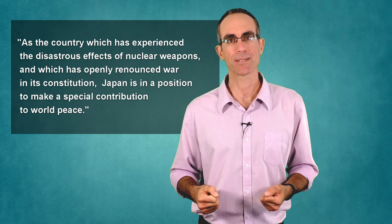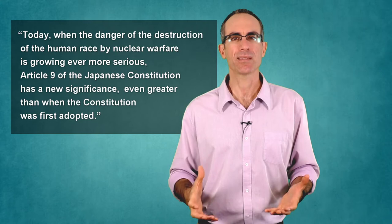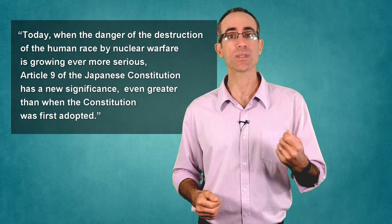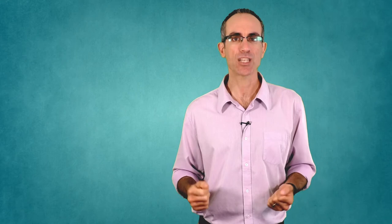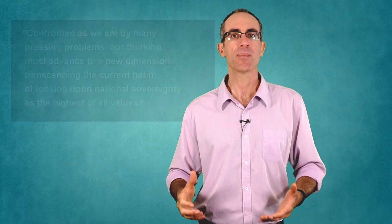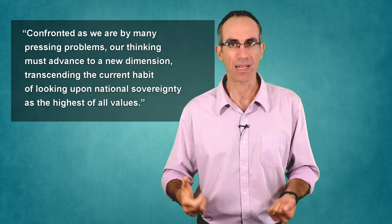They went on, today, when the danger of the destruction of human race by nuclear warfare is growing ever more serious, article 9 of the Japanese constitution has a new significance, even greater than when the constitution was first adopted. The statement also criticized traditional thinking and practices of international politics based on the concept of national sovereignty. Instead, it claimed, confronted as we are by many pressing problems, our thinking must advance to a new dimension, transcending the current habit of looking upon national sovereignty as the highest of all values.